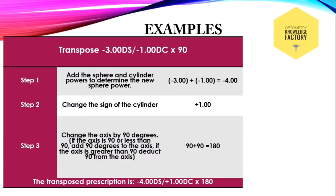Let's do some examples. First: transpose minus 3 diopter sphere with minus 1 diopter cylinder at 90. Here the cylindrical correction is in concave form, and we have to convert it into convex form by transposing. Step 1: add the spherical component with the cylindrical component. The spherical component is minus 3. Add minus 3 with minus 1, that is minus 4 diopter. This is the spherical component of the transposed form.